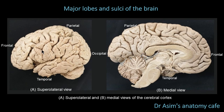To summarize, in this video we have discussed the four different lobes of the brain — frontal, parietal, occipital, and temporal — their main functions, and the boundaries between the different lobes of the brain.